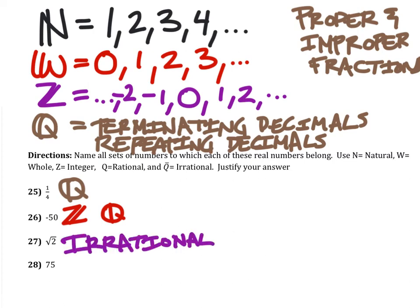And 75 is positive. It has no decimal, and it could be written as a fraction where the denominator is 1, which pretty much makes it natural, whole. It also is an integer, and it's rational as well.